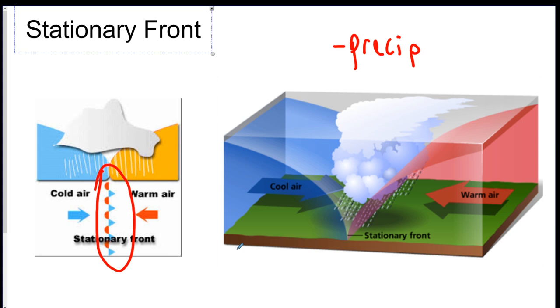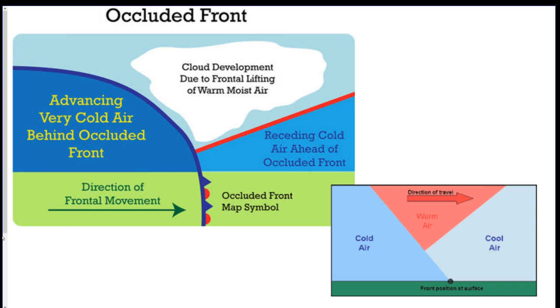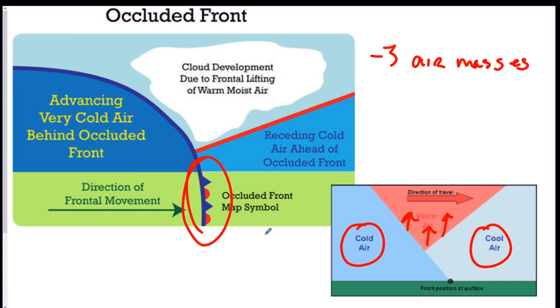The last type of front is the occluded front. So there's a couple of facts about this. It's a cold air mass and a warm air mass and a cool air mass. So there's three air masses involved in this. So what happens is the cold air and the cool air mass sandwich the warm air in between them causing it to rise. So it's like the bread and the filling right here of the sandwich. It's three air masses. The symbols look like this and it brings precipitation like rain and maybe some storms. That is literally all you got to know about fronts.